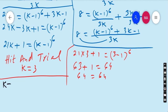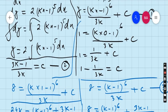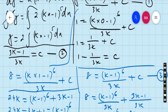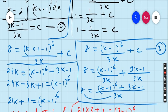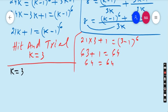So k is 3. Now what was our equation? (kx - 1) to the power 6 upon 3k plus c. But first we have to find the value of c by putting k equals 3 in equation number 2.